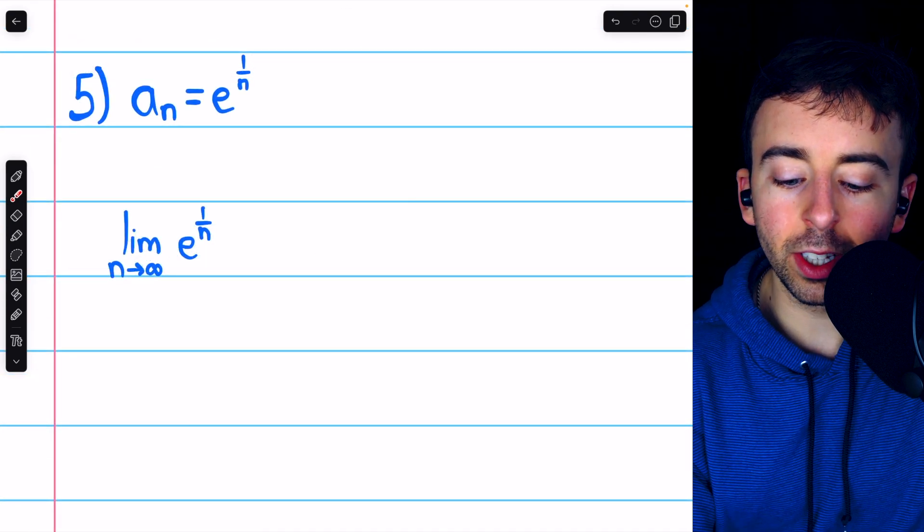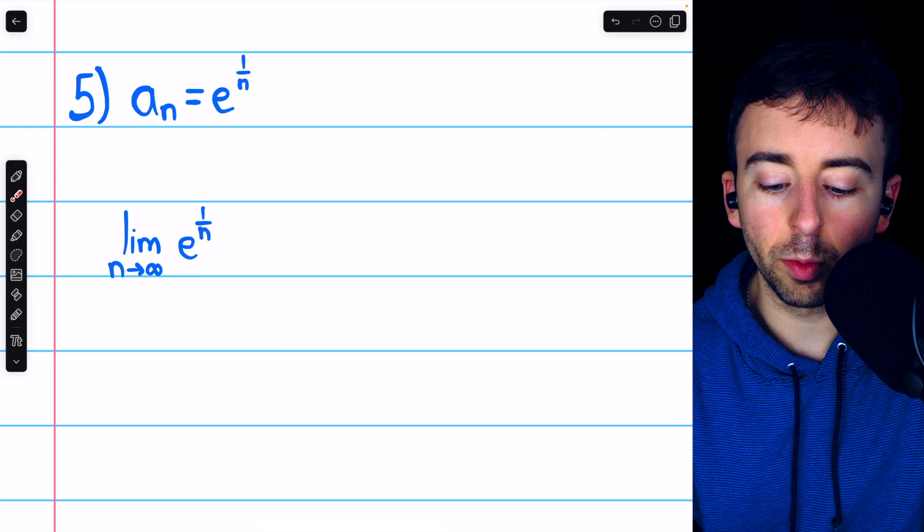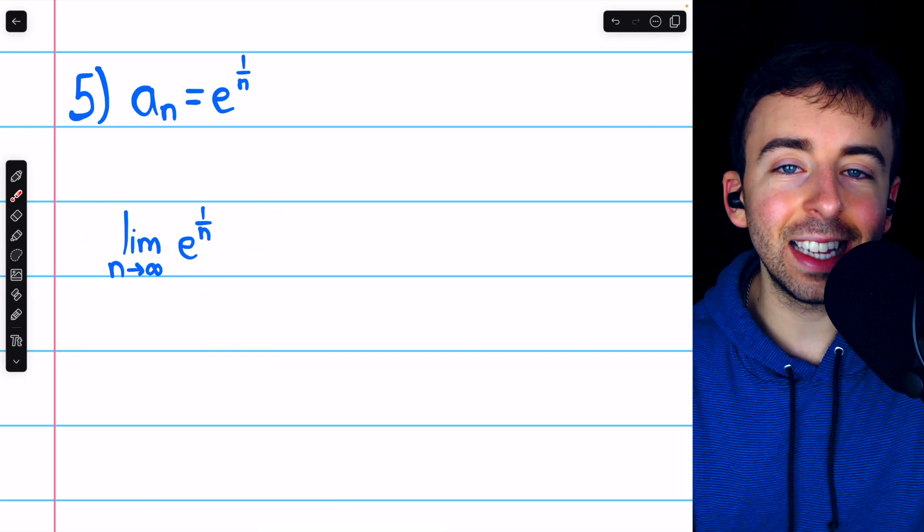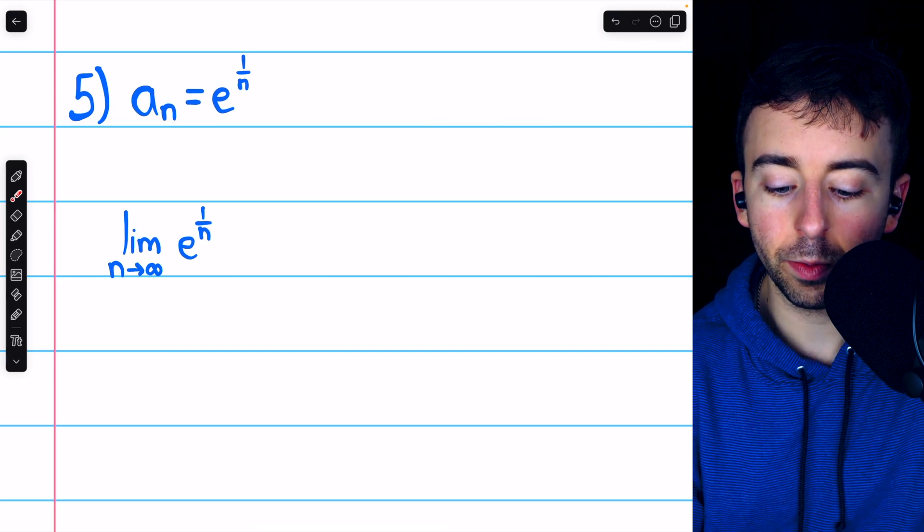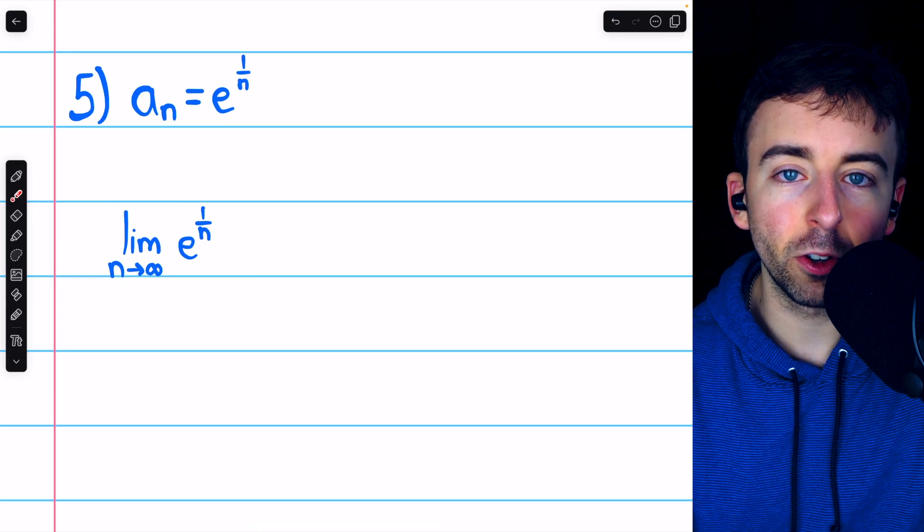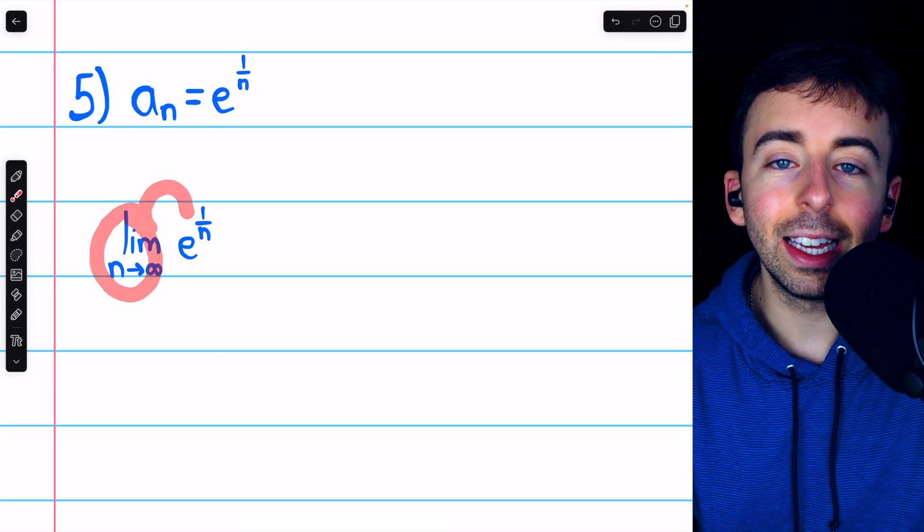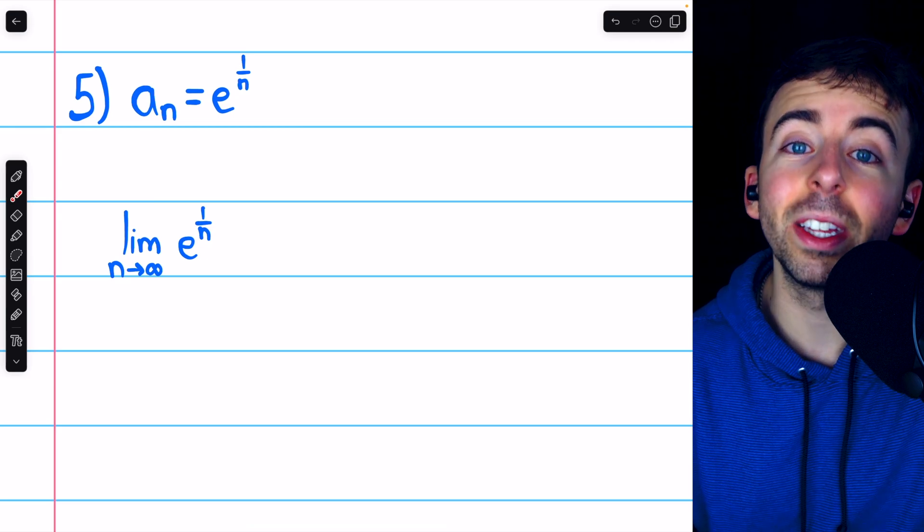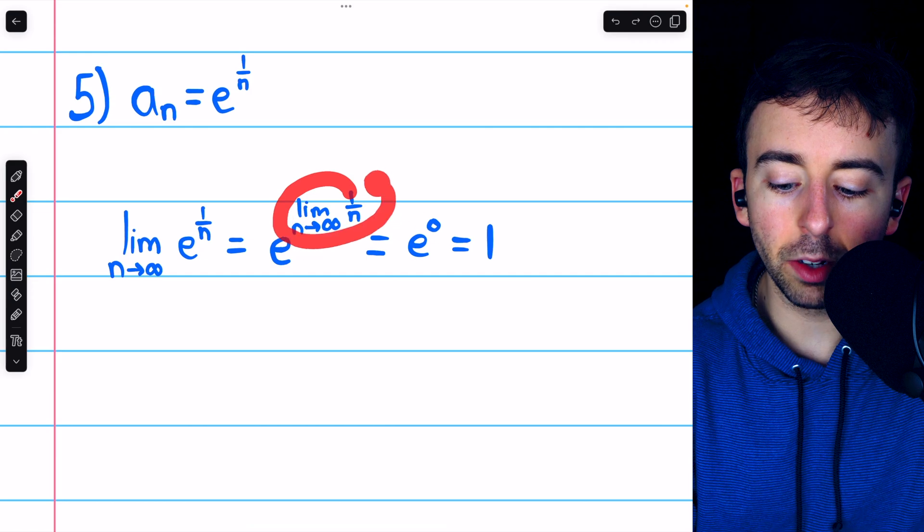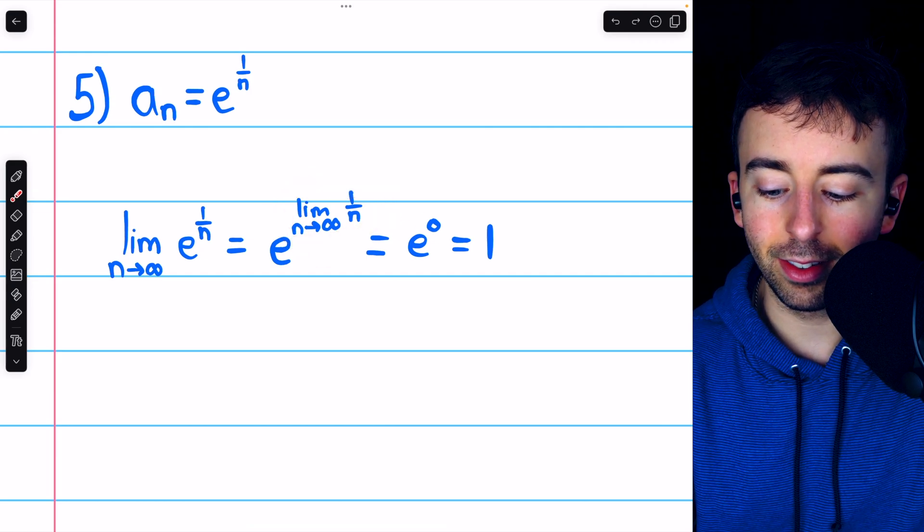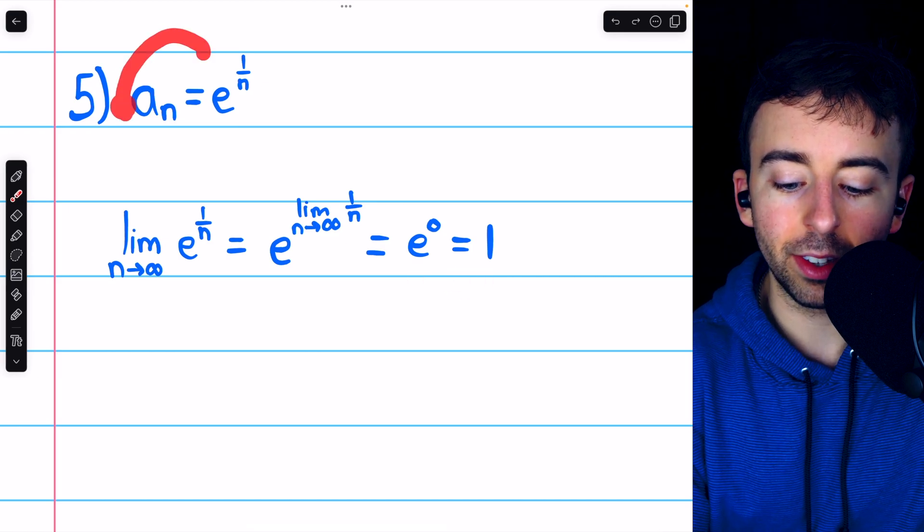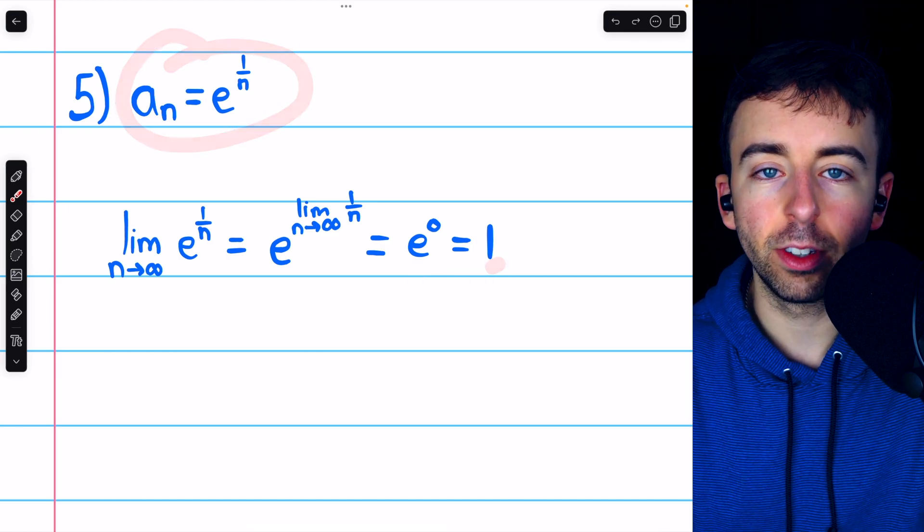In problem number 5, we're looking at the sequence whose terms are e to the 1 over n. The limit of e to the 1 over n is the same as e to the power of the limit of 1 over n, as n goes to infinity. Because the exponential function is continuous, we can just move the limit into the exponent, since it's only affecting the exponent. That's the only thing with an n. But then it's clear the limit of 1 over n, as n goes to infinity, is 0. So this is just e to the 0, which is 1. So the limit of this sequence is 1. It converges to 1.